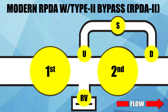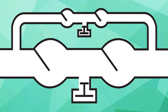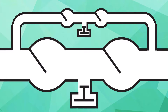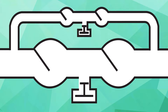Now that we have described the differences between the old RPDA Type 1 bypass and the modern RPDA Type 2 bypass, it is time to demonstrate how the two products provide exactly the same amount of backflow protection. When an RPDA of any type experiences a backflow condition, water can travel in reverse through two different paths: a path through the main valve or a path through the bypass.